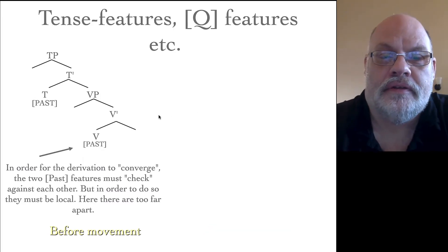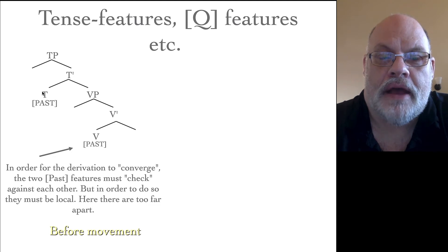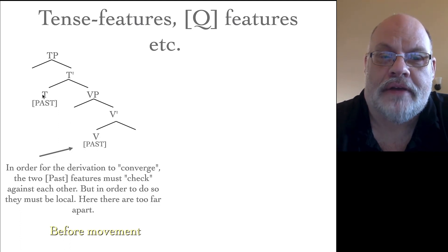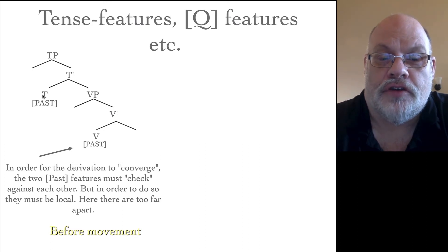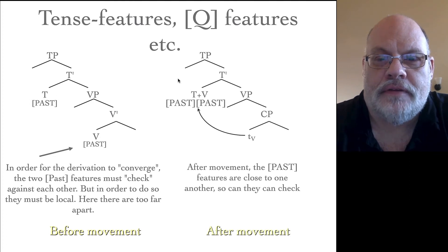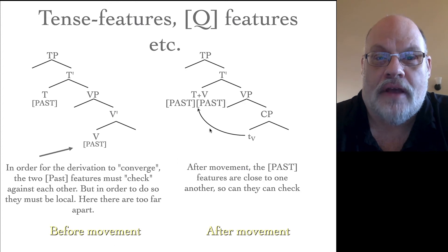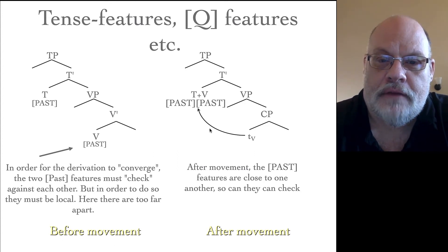We can even extend this to head movement. Take the case of French, for example, where French main verbs marked for tense actually appear in the T position. That's a case where we have a past feature on the verb and a past tense feature up on the T, and we want to make sure they are consistent with one another. If we had a present tense feature down here and a past tense feature up here, that would not be okay. So in order for the derivation to converge, we have to check these features against one another, and we do that by head movement. This is slightly different: instead of moving into the specifier position, we're moving a head into a head.